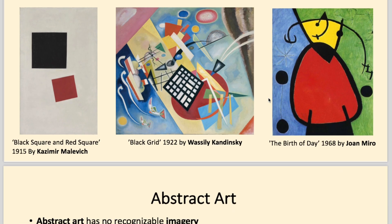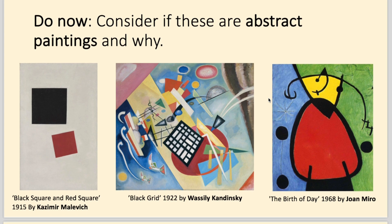The first thing to consider is: what is abstract art? These paintings here — could you consider why they might be abstract or not abstract? This one is painted by Kazimir Malevich, this one by Wassily Kandinsky, and this one by Joan Miro — all three very famous abstract painters. Basically, abstract art is pure form: pure line, form and colour without anything figurative in it.